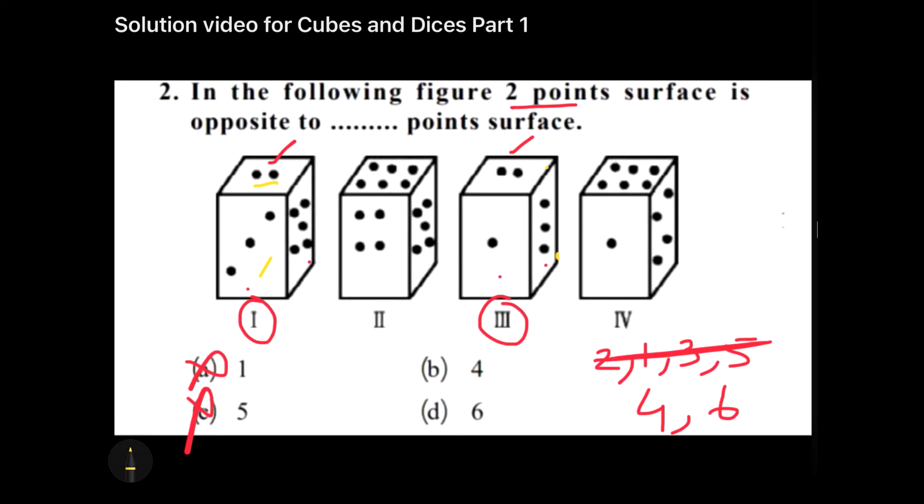If I just change the angle of photography for this cube from left to right, then I'll very clearly understand that this will be nothing but one and five being opposite to each other.